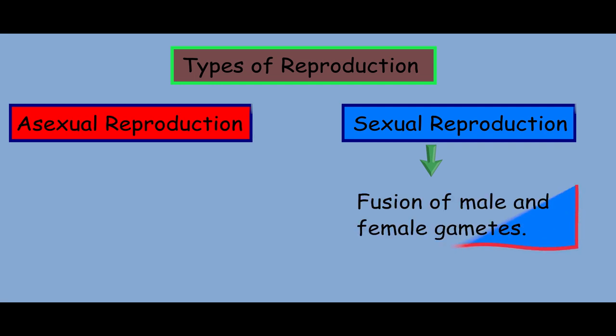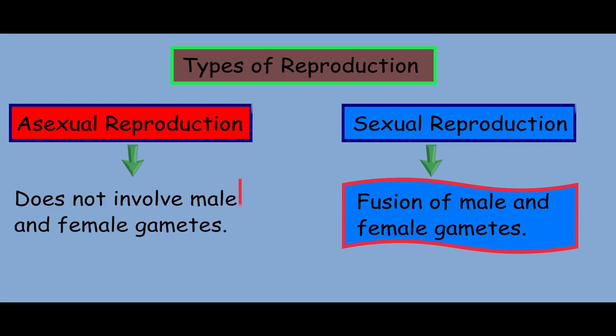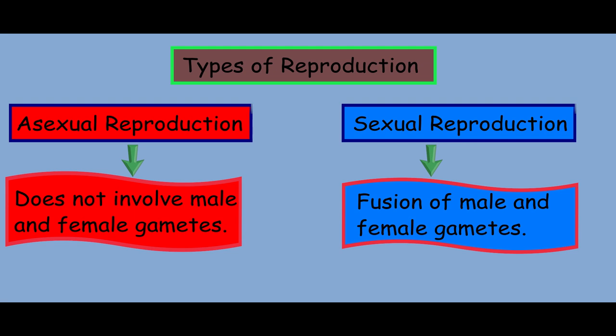Reproduction can be either sexual reproduction or asexual reproduction. In sexual reproduction, a new individual is produced by the fusion of male and female gametes. Whereas in asexual reproduction, an organism reproduces without the involvement of male and female gametes.